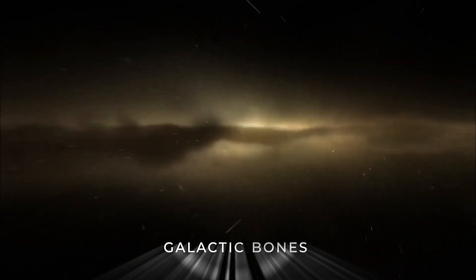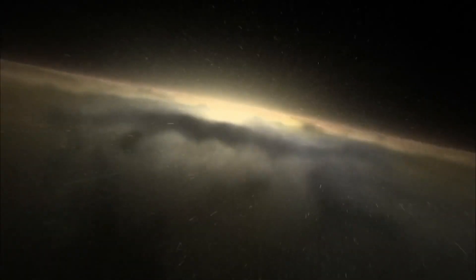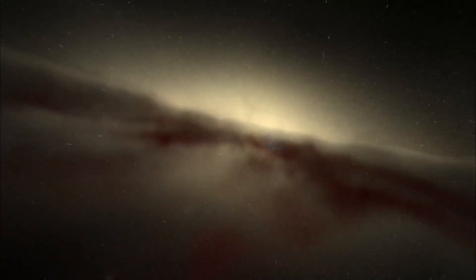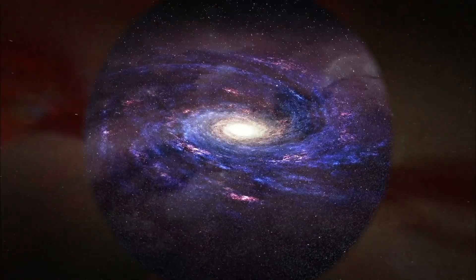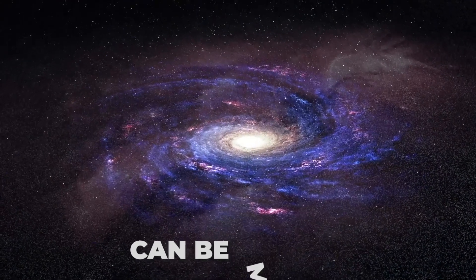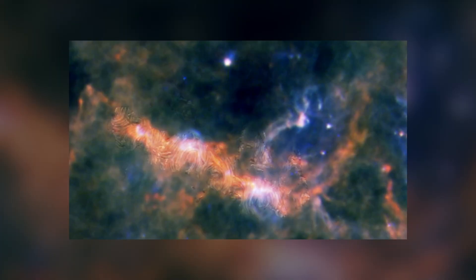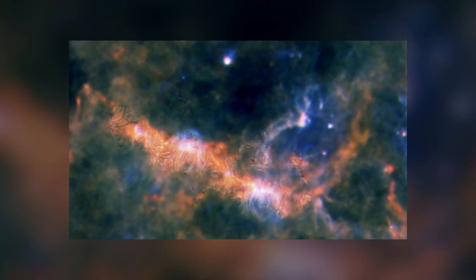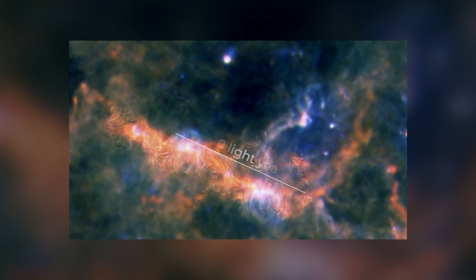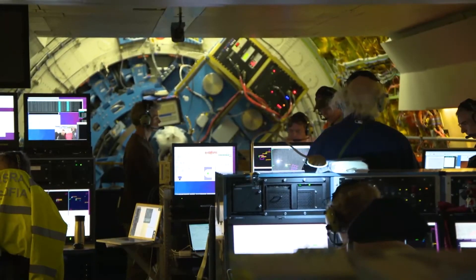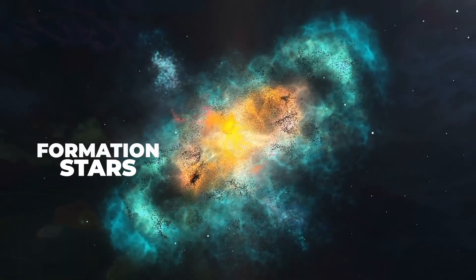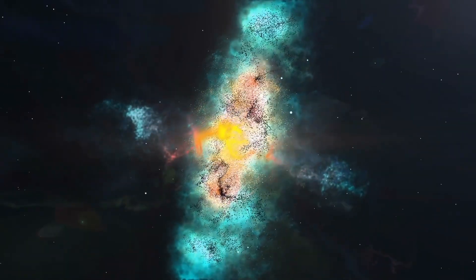These arms are called galactic bones, and are made up of dense gas and dust that run straight through the center of the spiral arms. The galactic bones of our galaxy can be massive. One of them, known as G-47, measures over five light-years in diameter and stretches for more than 200 light-years long. This research is leading scientists to understand how these powerful magnetic fields play a role in the formation of stars within these arms of the Milky Way.